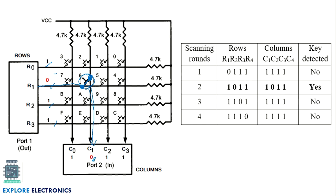We can observe the column value change to 0. Because the row line is connected to 0 from the microcontroller through the pressed key, the microcontroller reads column value as 1011 and the active row value is also 1011. When the row value and column value match — both 1011 — that identifies the sixth key as pressed.